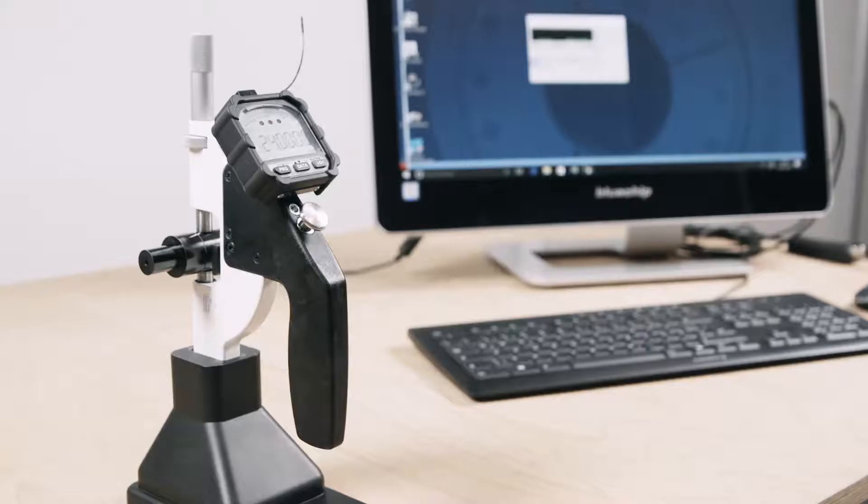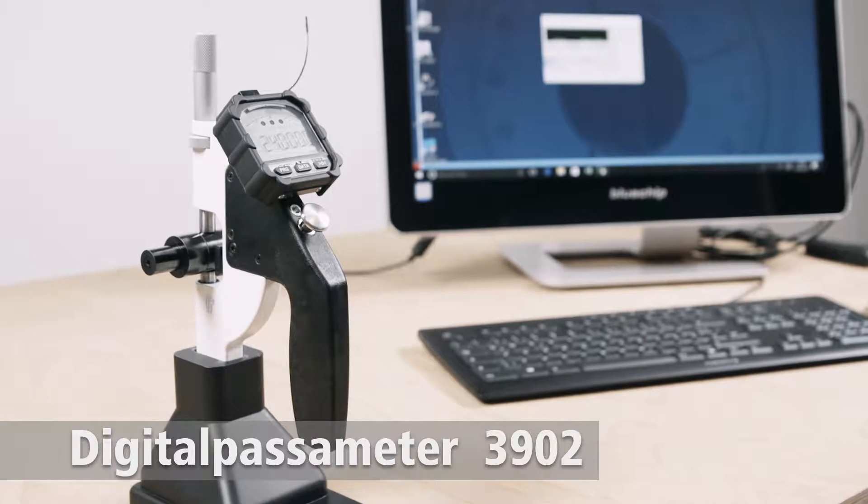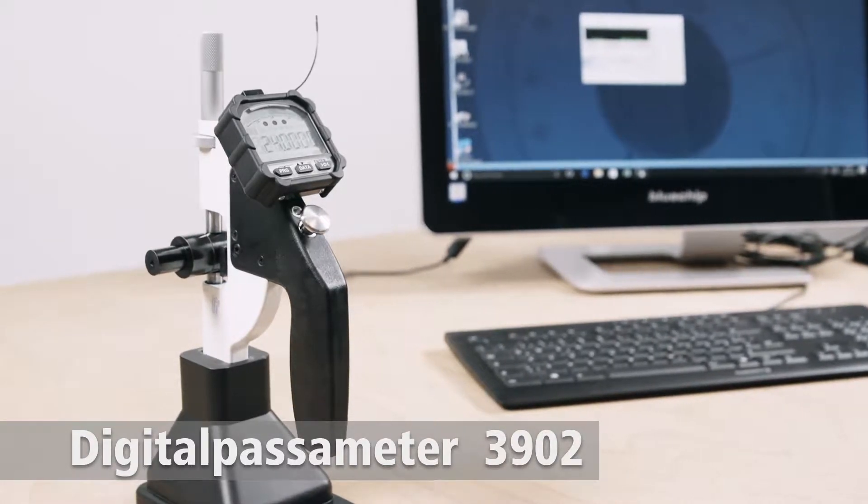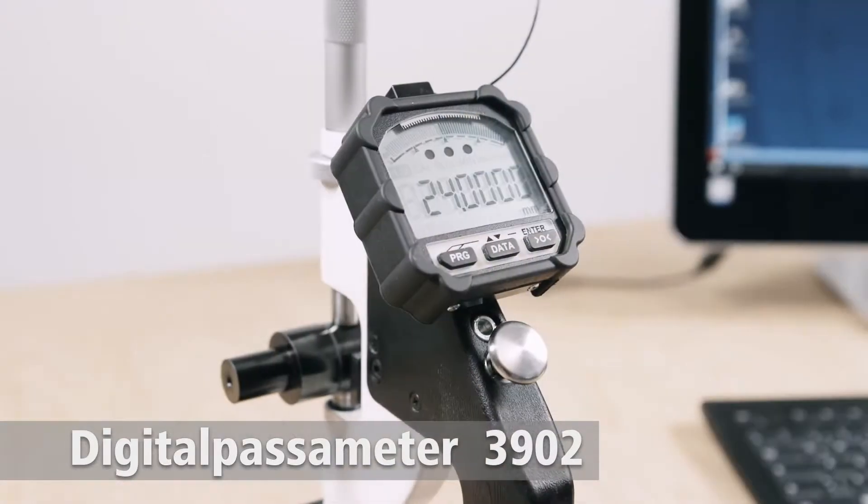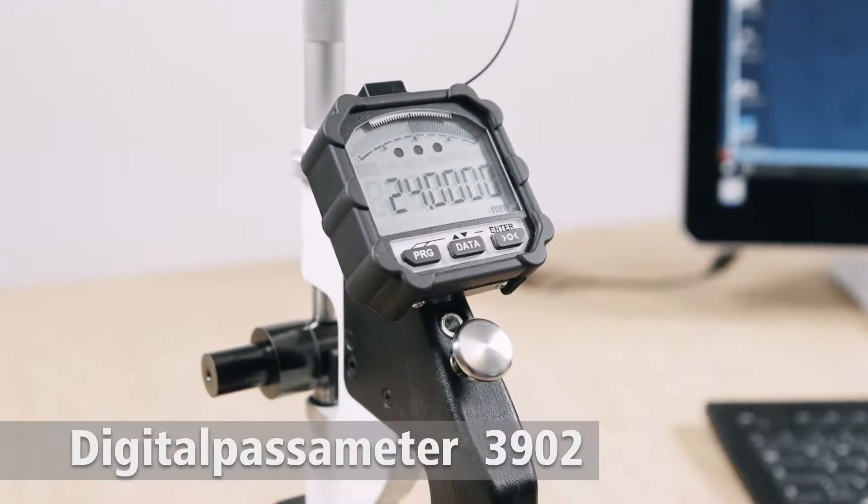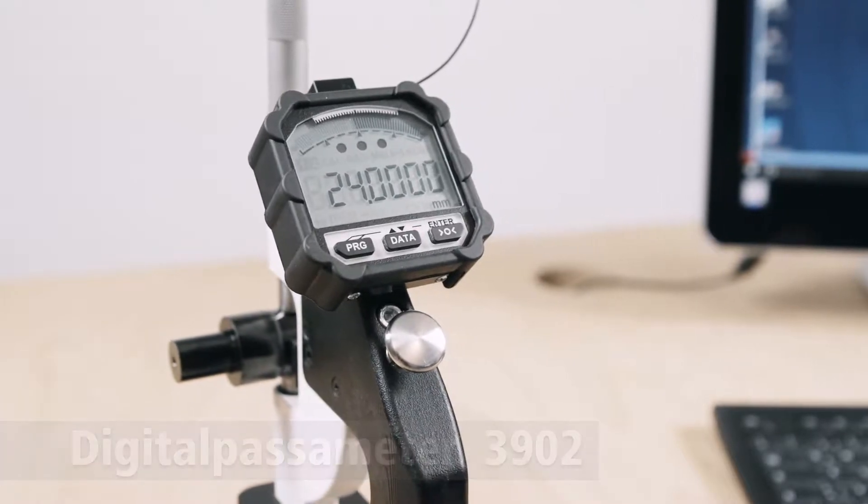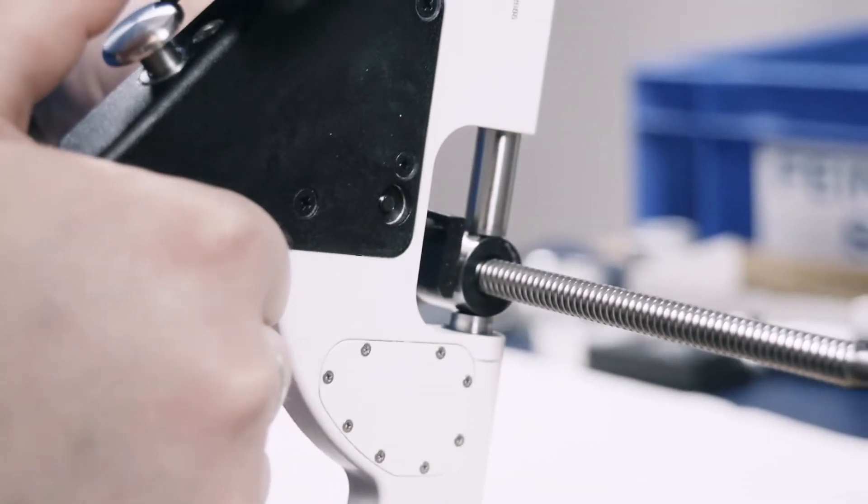Even under conditions that are far from ideal. The Digital Passameter 3902 from Feinmess Suhl, with its sturdy IP65 protection class measuring equipment body and novel inductive measuring system, is the ideal solution for production-related quality controls and serial measurements.